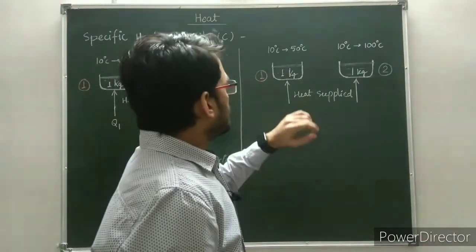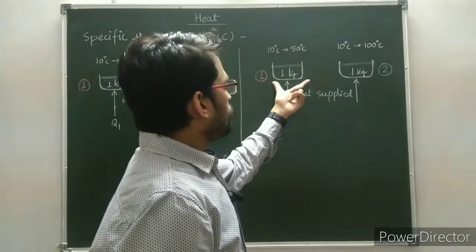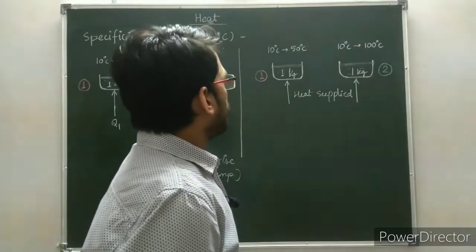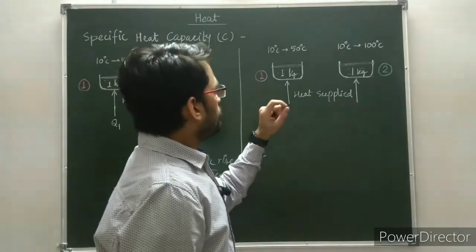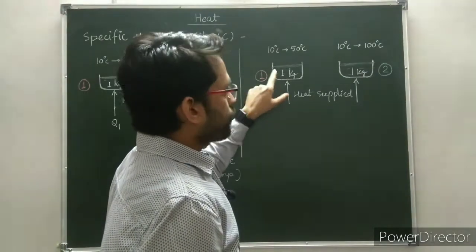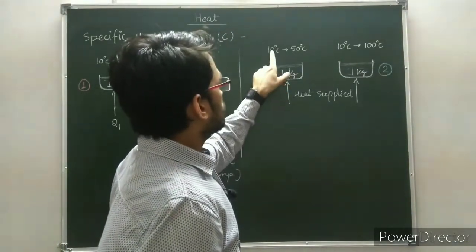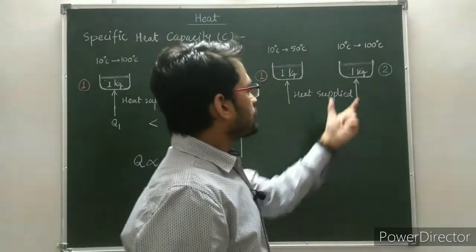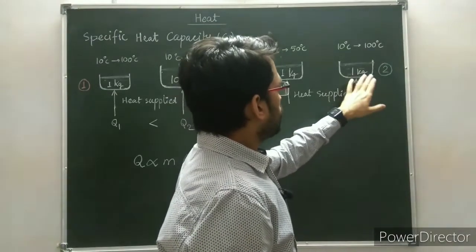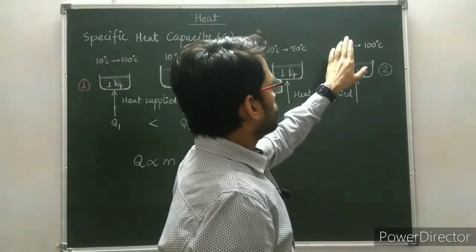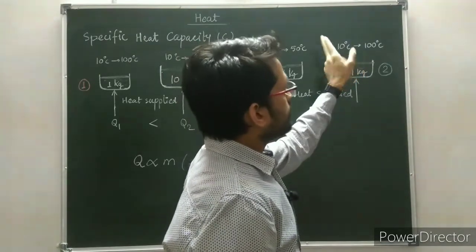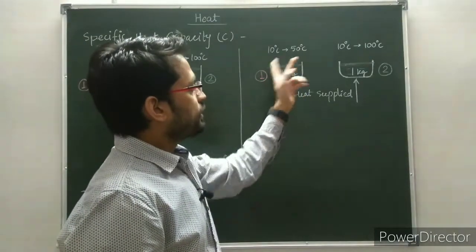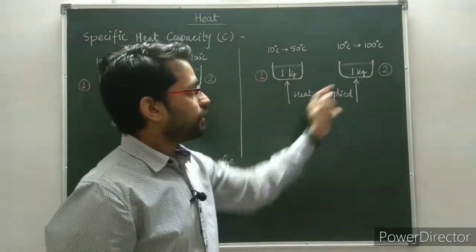Now come to the next diagram. In this diagram, we have two identical containers having equal mass of water, that is 1 kg each. But we have to raise the temperature of the first container from 10 degrees Celsius to 50 degrees Celsius, whereas for the second container, we have to raise the temperature from 10 degrees Celsius to 100 degrees Celsius. So the rise in temperature is different, but the mass is the same.